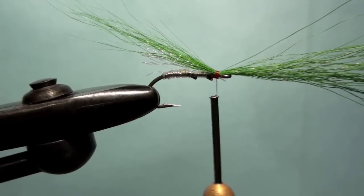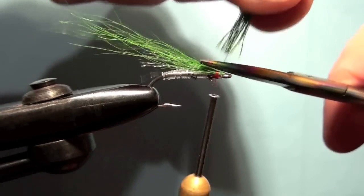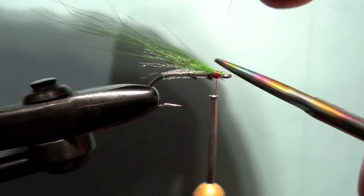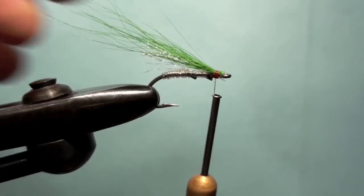This is a case where you want a pretty sparse fly. It's a good case of where less is more. Those are gone. Get rid of those guys. Don't want no stragglers. You can actually pull those back if you feel you've tied them too tight.